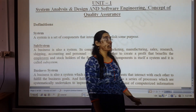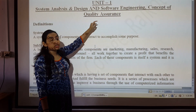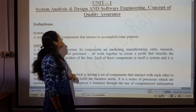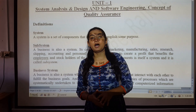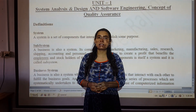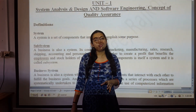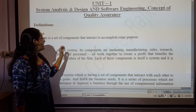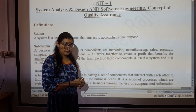Let's start with our first unit: System Analysis and Design, and Software Engineering Concepts of Quality Assurance. First, let's look at the definition of system analysis and design. What do we mean by system? A system is a set of components that interact to accomplish some purpose.